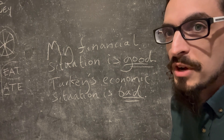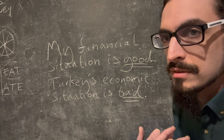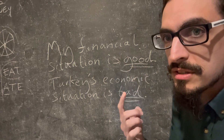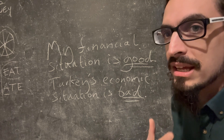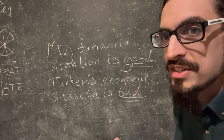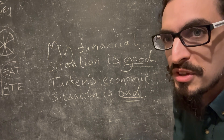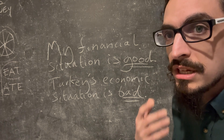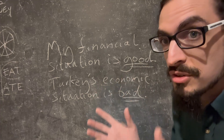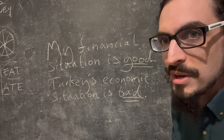We use 'financial' to talk about your personal money situation. For example: my financial situation is good. I have a good job, I'm making a good salary, I can afford to pay my rent and basic bills and put food on the table. We use 'economic' to talk about the country's economic situation — the country's money situation.